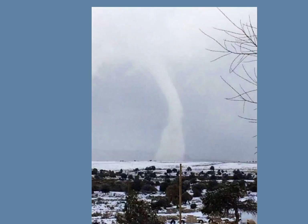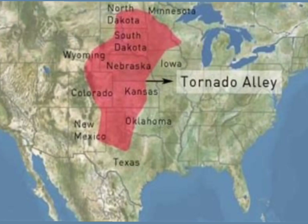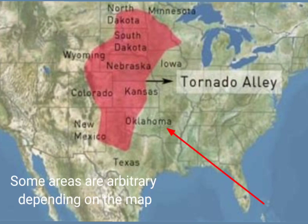Tornadoes have been observed and documented on every continent except Antarctica. Most tornadoes occur in the United States in an area called Tornado Alley, which runs through Texas, some parts of New Mexico, Oklahoma, Kansas, Nebraska, North Dakota, and parts of Colorado. The city with the most tornadoes is Oklahoma City.